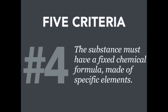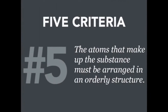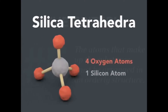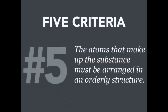Criteria number five: the atoms that make up the substance must be arranged in an orderly crystal structure. The majority of minerals on Earth's surface are silicates, made up in part of silicon and oxygen. The silica tetrahedra is the most common arrangement of silicon and oxygen atoms within a mineral — with oxygen atoms surrounding a central silicon atom in a tetrahedral shape, forming the most common building block of minerals.